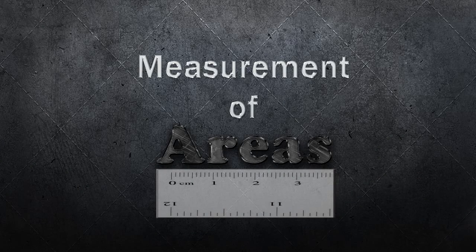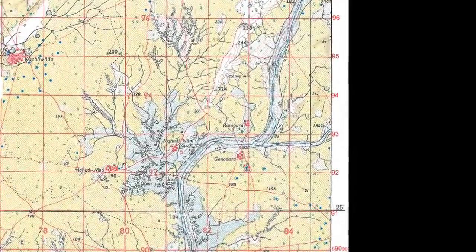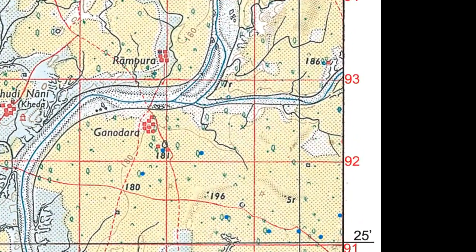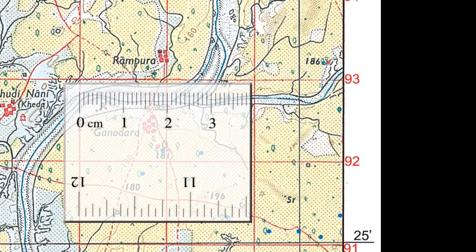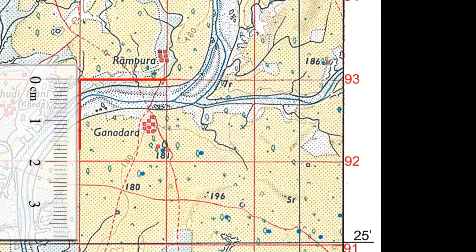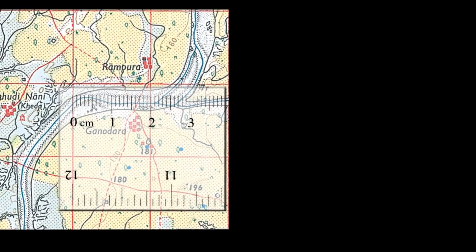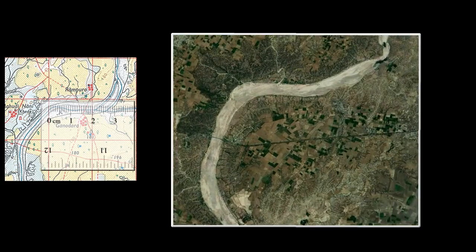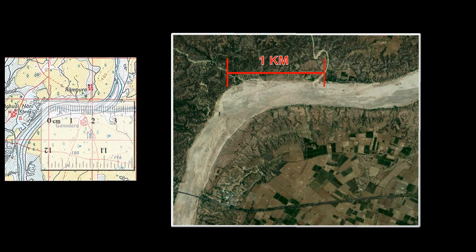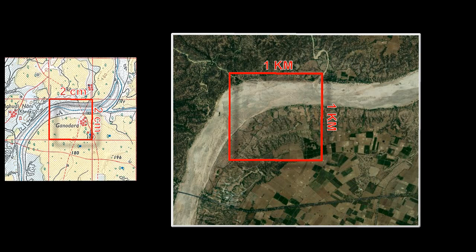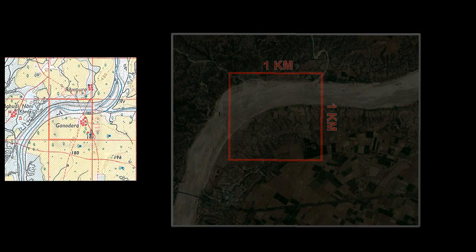Measurement of areas: the area on the topographical map is covered by a number of grid squares. Each square measures two centimeters by two centimeters, or one square kilometer. Since two centimeters on the map are equivalent to one kilometer on the ground, each grid square measures one square kilometer in area.